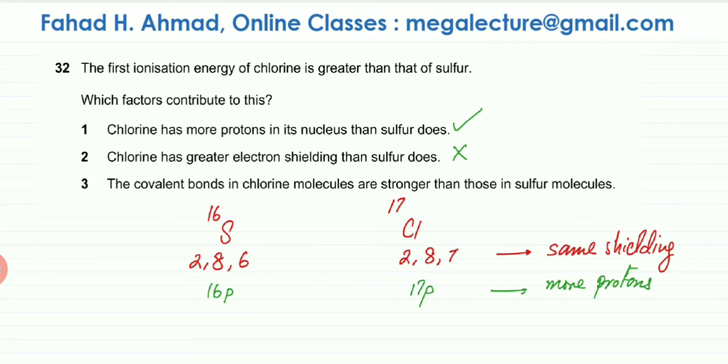And the third one is that the covalent bonds in chlorine molecules are stronger than those. Now remember this is not about bonding. This is about first ionization energy which is, what is the first ionization energy? It's the energy needed to remove one mole of electrons from one mole of gaseous atoms. So you're basically not trying to bond them or trying to break bonds. What you're doing is you're trying to remove an electron from the outermost shell from sulfur as well as from chlorine.